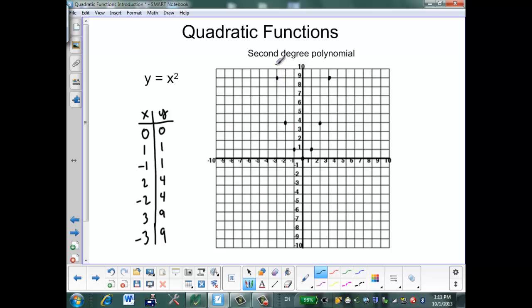Because these points correspond to the points that I calculated into my table of values. So this is the shape of a quadratic. This is the basic quadratic shape and we call this shape a parabola.